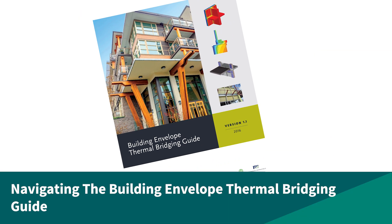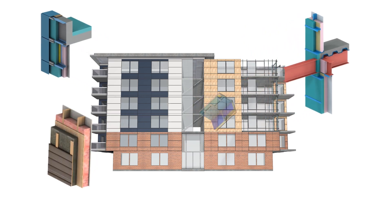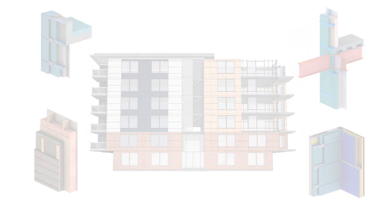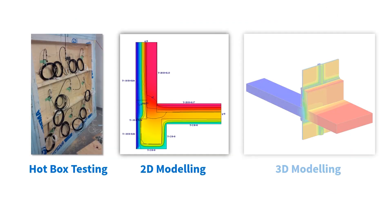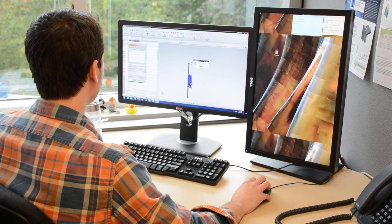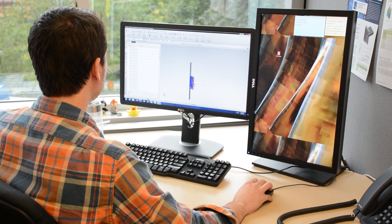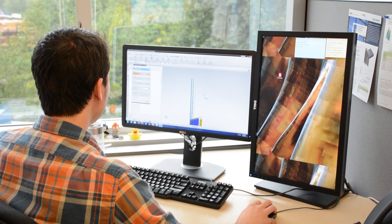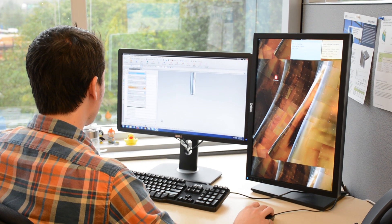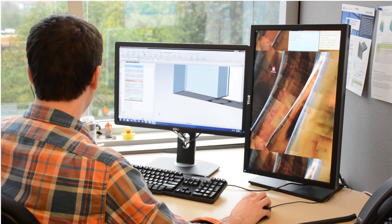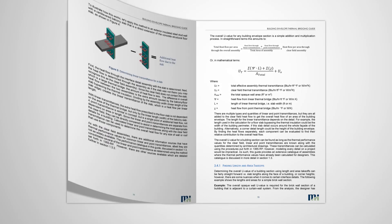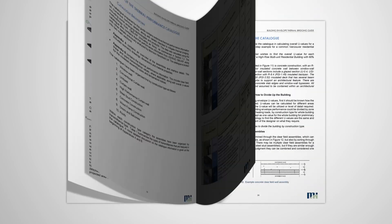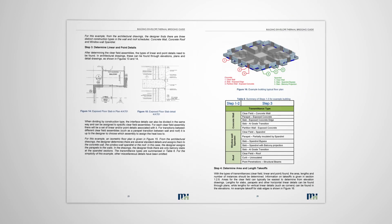Navigating the thermal bridging guide. Calculating clear field U values can be done by many methods depending on the complexity of the clear field assemblies — by hand calculations for simple assemblies like some wood frame, or hot box testing, or 2D and 3D modeling. For the calculation of psi or chi values, this can also be done in many ways, but most often by 2D and 3D thermal modeling. If we do not have the ability to do testing or 2D or 3D modeling, this is where the Building Envelope Thermal Bridging Guide comes in. The guide contains thermal performance information for over 500 details, clear field assemblies, and scenarios to help determine building envelope thermal performance.